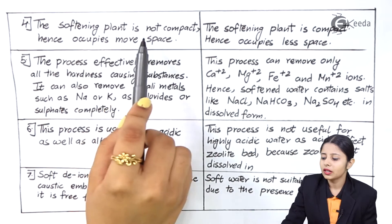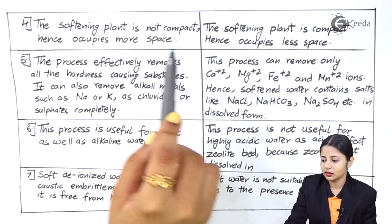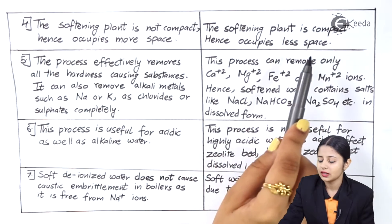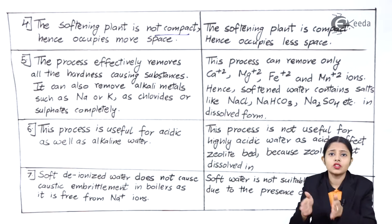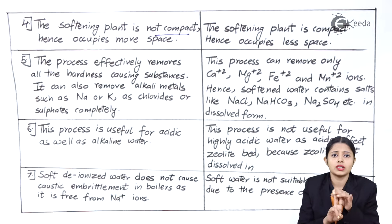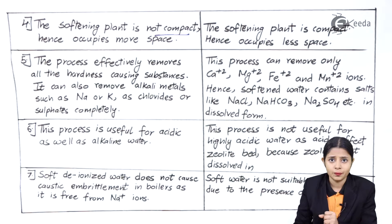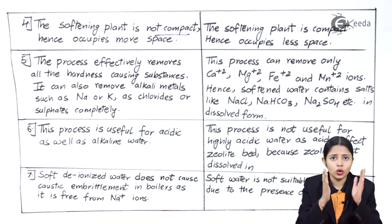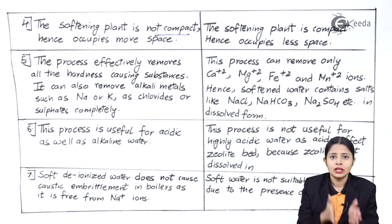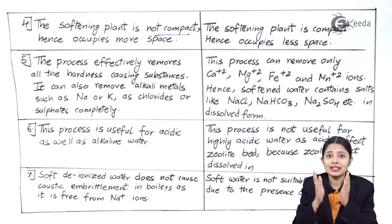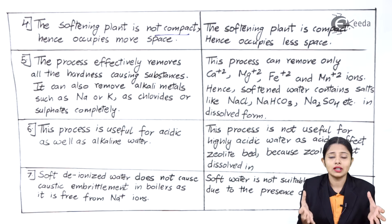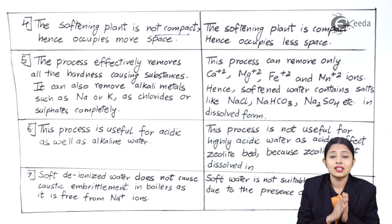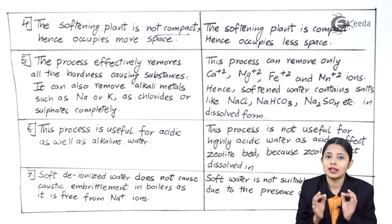Fourth point — The ion exchange softening plant is not compact, hence it occupies more space. This is because it has three cylindrical chambers: the first for removing cations, the second for removing anions, and the third for removing dissolved gases. These three stages require three separate cylinders, so the entire process cannot be done in a compact space. The zeolite process does not have this issue and is therefore more compact, occupying less space.